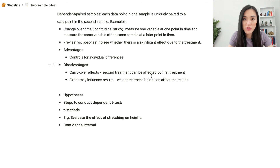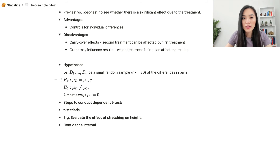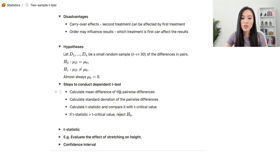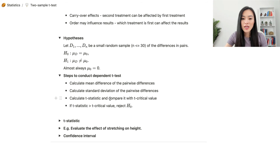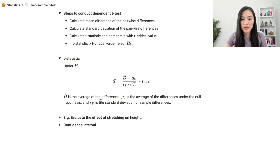For testing the difference between dependent samples, let d1, d2, ..., dn be a random sample of pairwise differences. The null hypothesis is mu_d = mu_0 and the alternative hypothesis is mu_d ≠ mu_0; almost always mu_0 = 0, so we're testing if the difference is zero. The steps are: calculate the pairwise differences, obtain the standard deviation of the pairwise differences, calculate the t-statistic, and compare with the t-critical value. The t-statistic is t = (d-bar - mu_0) / (sd / sqrt(n)).